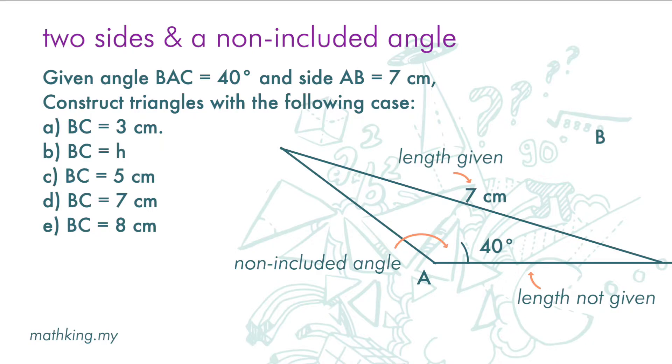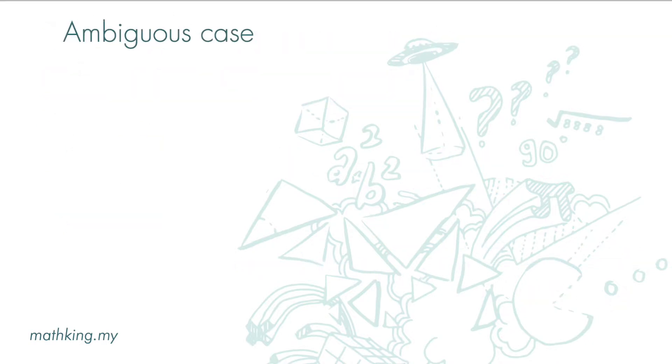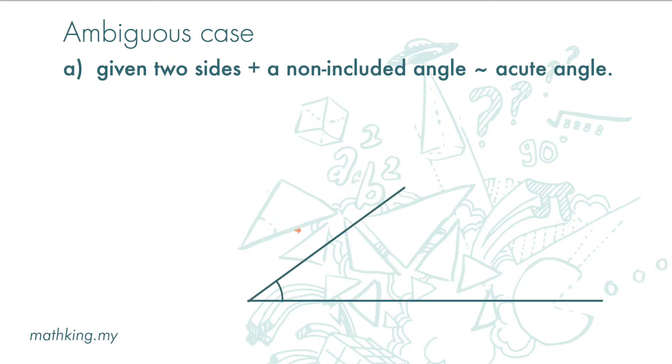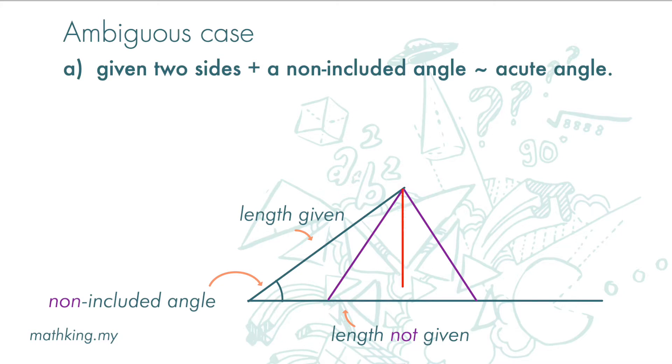So, to summarize, for ambiguous case to exist: A. We are given two sides with a non-included angle, which is an acute angle. B. The side that is opposite the non-included angle must be greater than H, the height of the triangle, but less than the other side that is given.